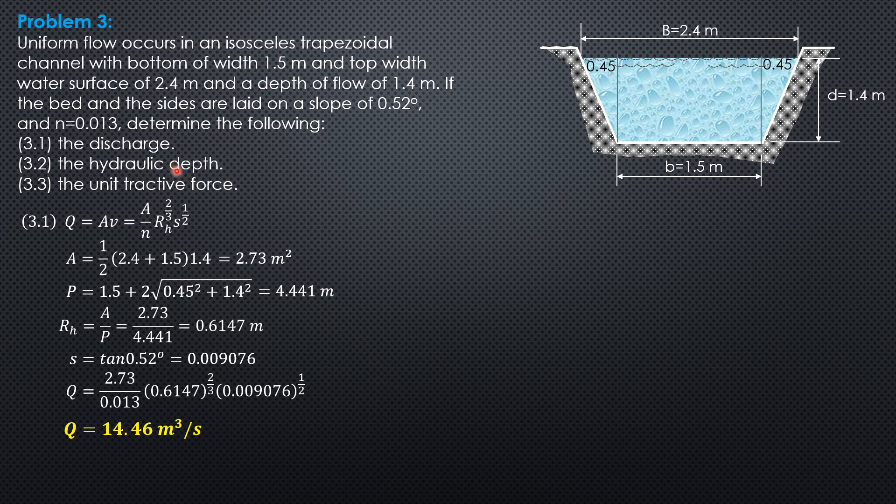The hydraulic depth is simply the ratio of cross-sectional area of channel to the top width. So area over capital B, 2.73 over 2.4, so 1.138 meters.